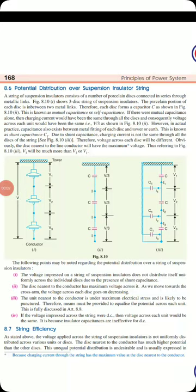Hello dear students, welcome to the Transmission and Distribution class. In the previous class we saw the different types of insulators. Today we will see how potential distributes over a suspension insulator string. Suspension insulators are used in a string — meaning a number of disks are used together depending upon the voltage level. If we have a 33 kV system, we use a string of three disks cascaded together.